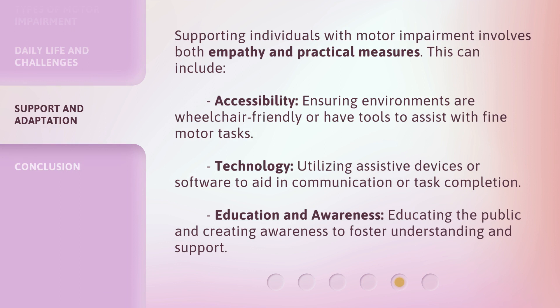Supporting individuals with motor impairment involves both empathy and practical measures. This can include Accessibility — ensuring environments are wheelchair-friendly or have tools to assist with fine motor tasks — Technology — utilizing assistive devices or software to aid in communication or task completion — and Education and Awareness — educating the public and creating awareness to foster understanding and support.